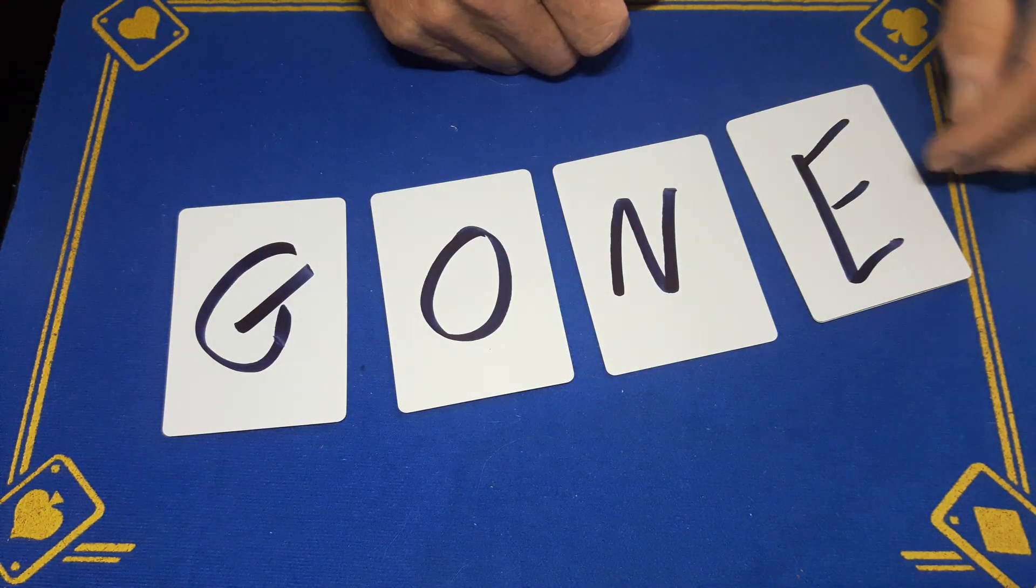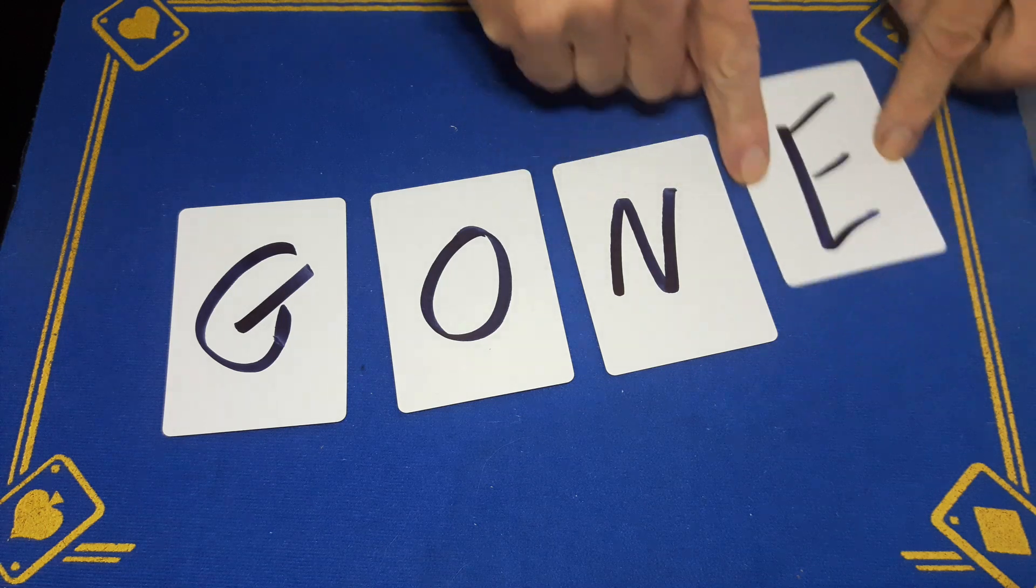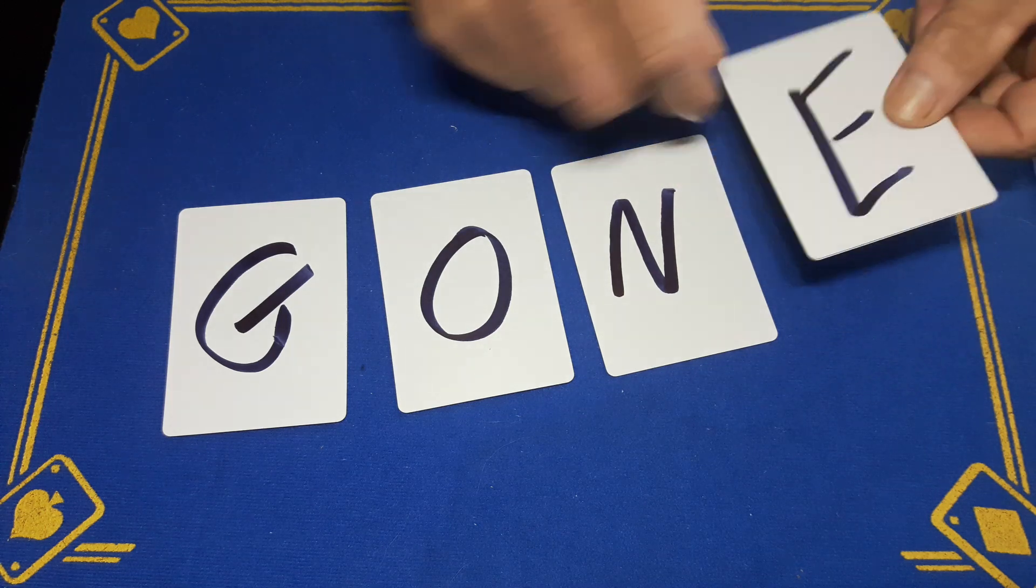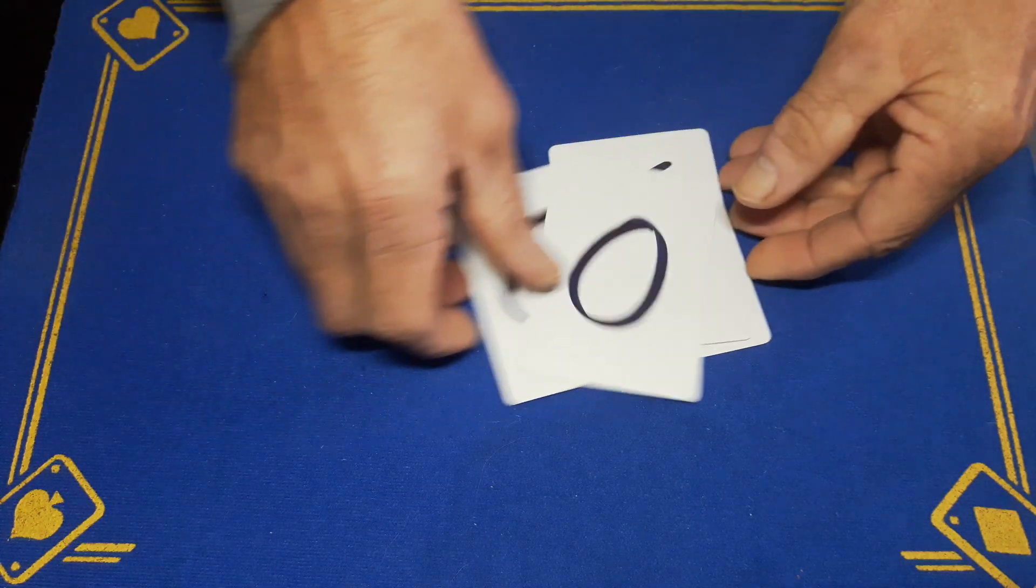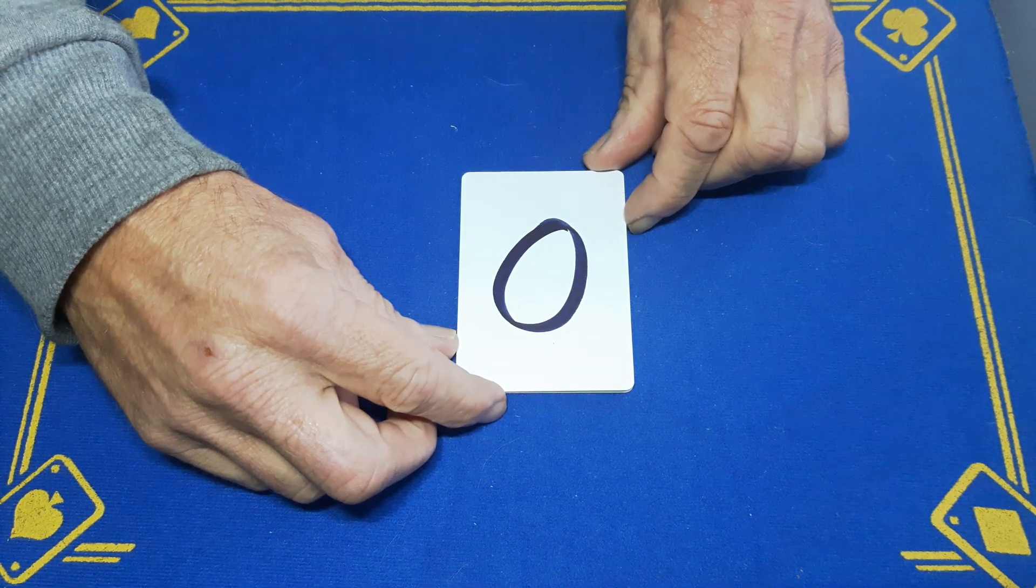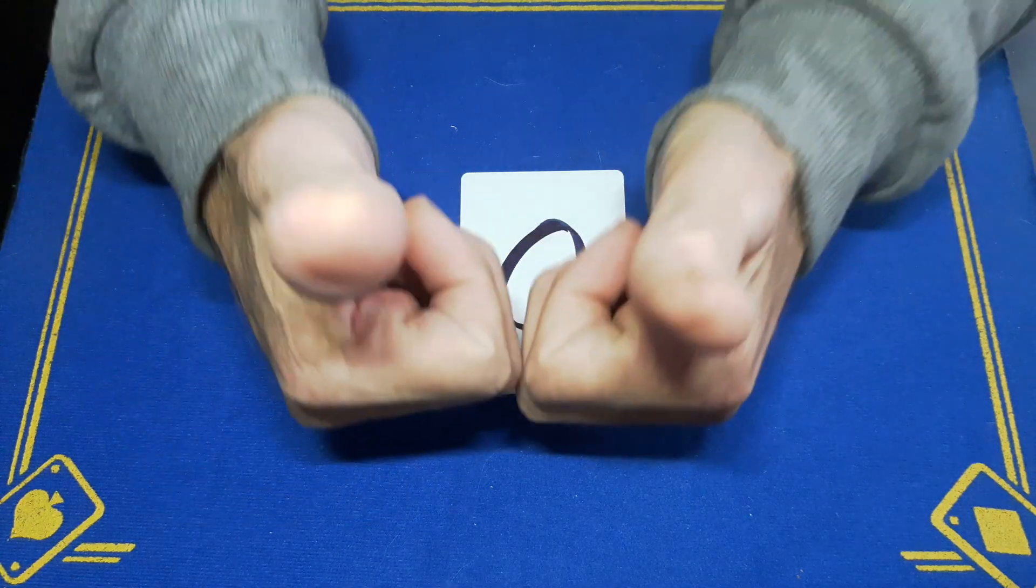But always remember this is your double card, but if you press on these corners on the edges it shouldn't split. So that is Gone by the Gaffed Academy. Comment, subscribe, like guys and come back tomorrow for another card trick. Cheers.